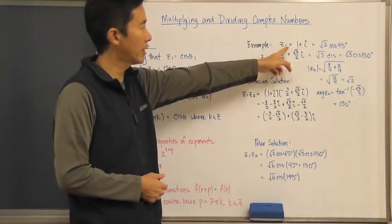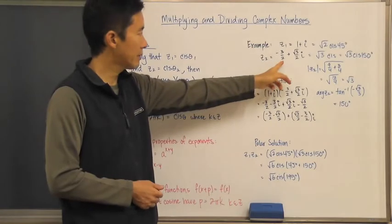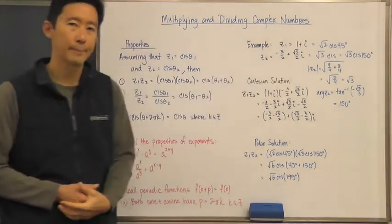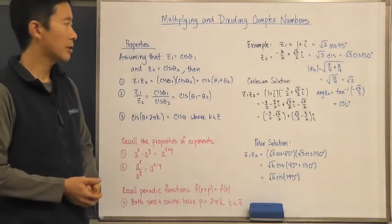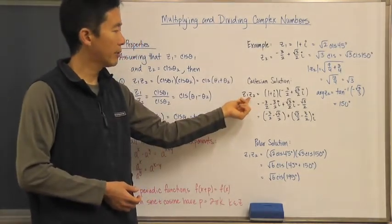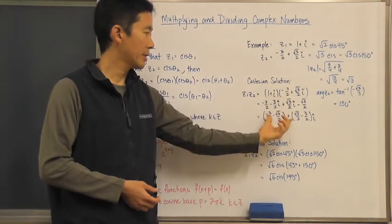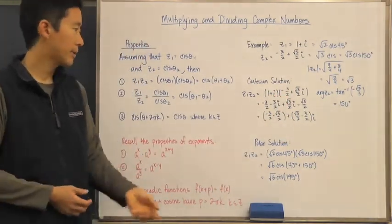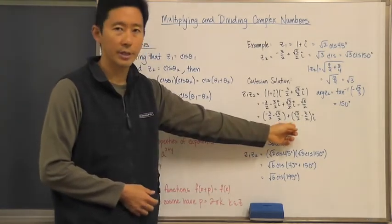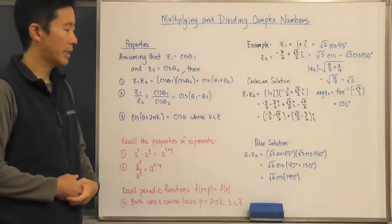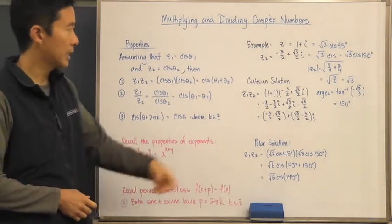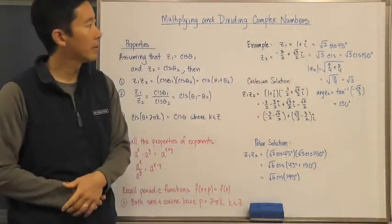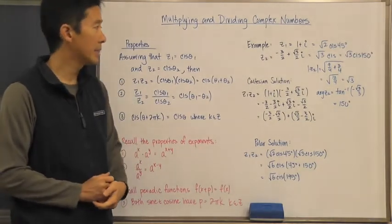Let's look at a couple of examples. Say z₁ is equal to 1 + i and z₂ is equal to negative three-halves plus (√3 / 2)i. For the Cartesian solution, we just multiply using FOIL, combine the real and imaginary parts, and get the resulting expression. For the polar solution, z₁ converts to √2 cis 45°.